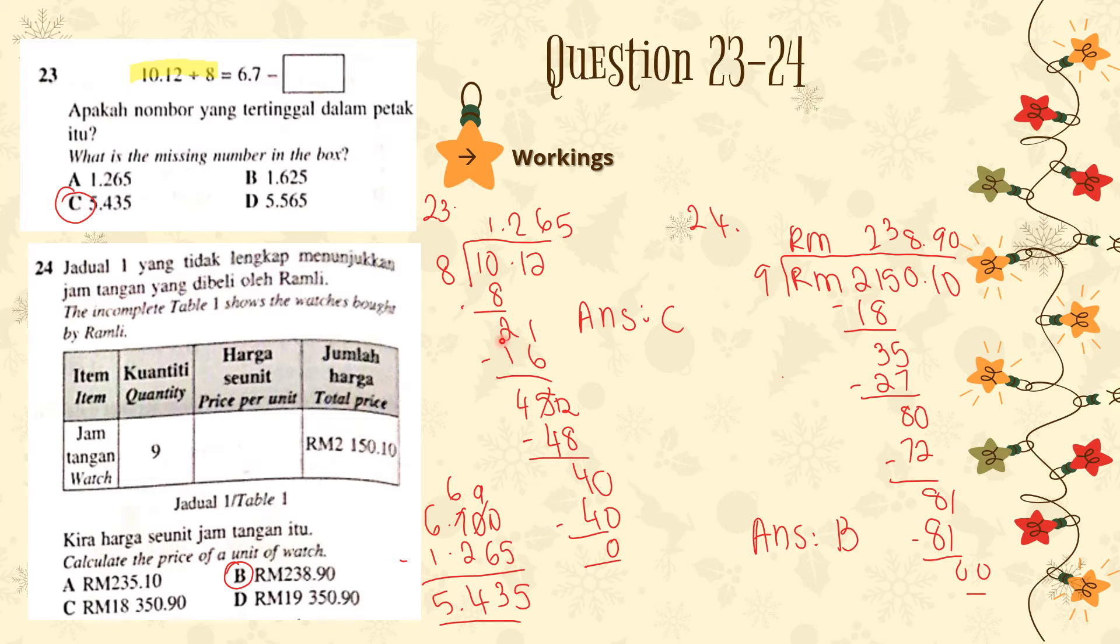Next, moving on to Question 24. The instruction, the incomplete table shows the watches bought by Romley. Then the question is calculate the price of the unit of a watch. So let's see the table here. Item, watch, quantity 9. Price per unit is not given and total price is RM2150.10. But they did not ask the total price. They want the unit price, which is the price of 1 watch. So in order to find that, the total price, you have to divide by 9. So I already did that and I get the answer RM238.90. So the answer is B.